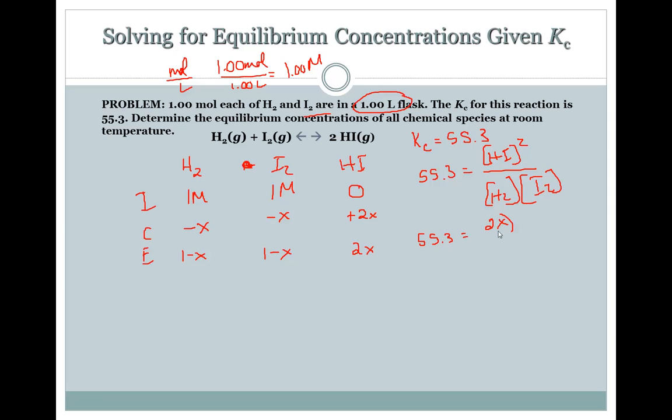And I2 is 1.065 times 10 to the negative 3. And that's where we get this equation from. This is our HI at equilibrium, this is our H2 at equilibrium, this is our I2 at equilibrium. Which gives us the number of 51 for equilibrium constant.